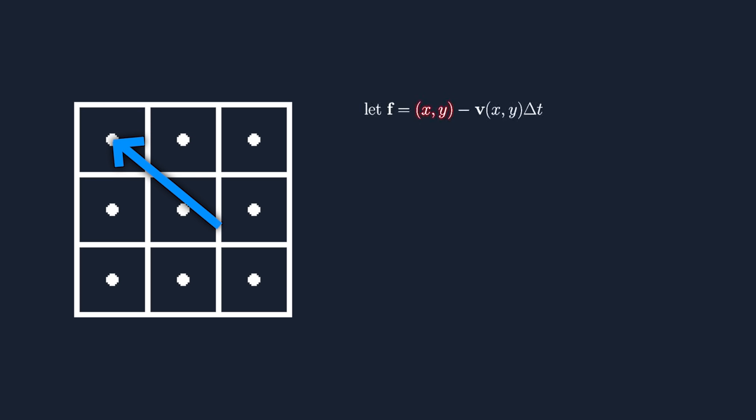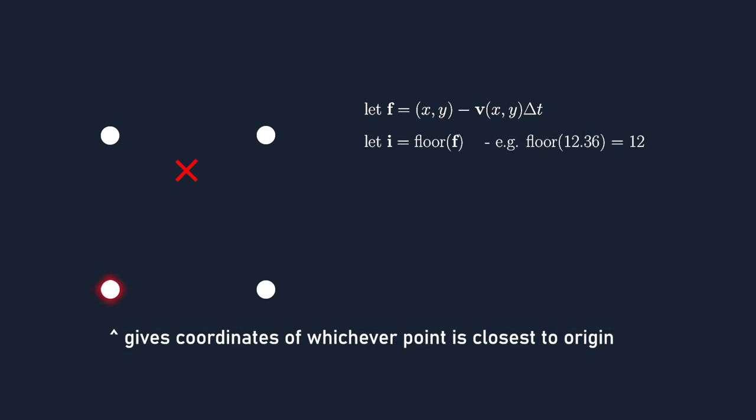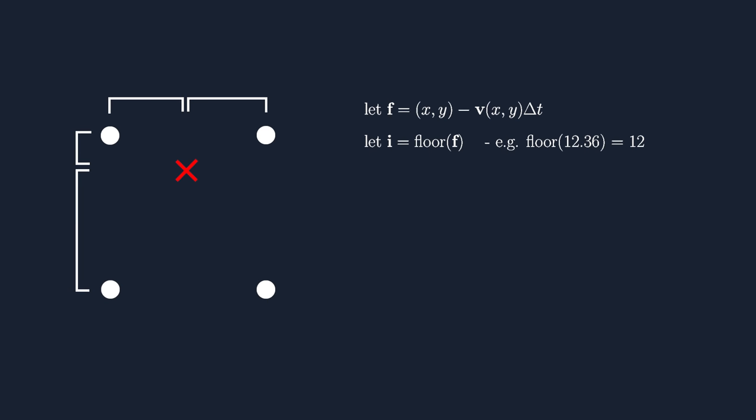To find the position where the next density value is coming from, we can simply get the position of the square and subtract its velocity from it, multiplied by the delta time. Then, to find out what square centers surround this position, we can find the floor part of the coordinates, or in other words the integer part. To find the precise position in between those square centers, we can find the fract part, or the fractional part.